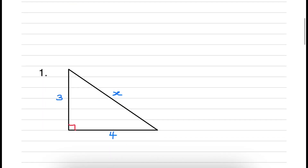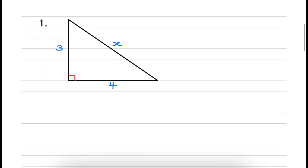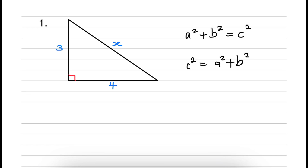Let's go ahead and look at our first example — we're going to solve x for this triangle. We have our two shorter sides being 3 and 4, and then our longest side, the hypotenuse, is x. Now instead of writing it as A squared plus B squared equal to C squared, I'm going to swap it around and write it as C squared equal to A squared plus B squared, because the hypotenuse is the thing I'm trying to calculate — I want to make that the subject of the formula.